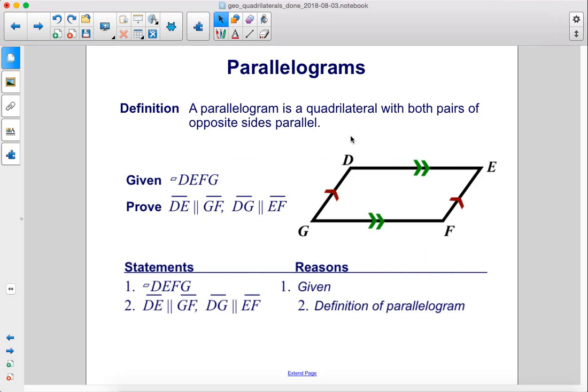A parallelogram is a quadrilateral with both pairs of opposite sides parallel. So given parallelogram DEFG, prove that DE is parallel to GF and DG is parallel to EF.